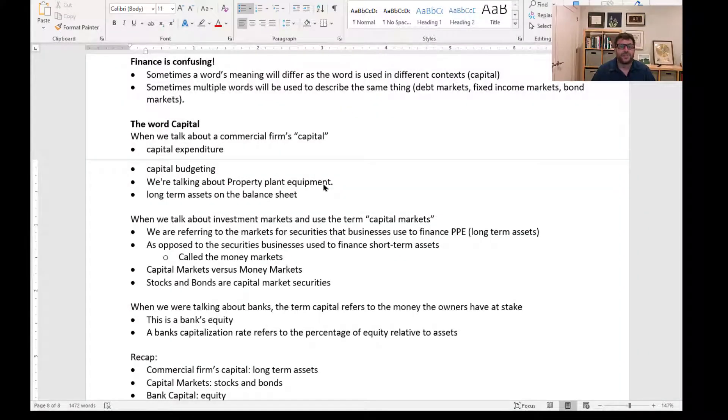Finance terminology is confusing. Sometimes a word's meaning differs depending on context, and sometimes multiple words describe the same thing, like debt markets, fixed income markets, and bond markets. 'Long' can mean owning something or long maturity; 'short' can mean selling something you don't own or short maturity. You can be long a long bond or short a long bond, long a short bond or short a short bond.